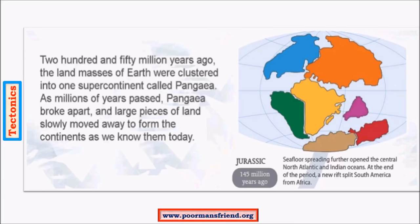During the Jurassic period, about 145 million years ago, movement was very quick. India was moving fast towards the equator, Madagascar was still close to Africa, and clear divisions appeared between South America and Africa, and between North America and Asia. The rift between Australia and Antarctica had formed, so Australia started drifting eastwards — contrary to what Wegener predicted — while India continued moving northwards towards the equator.